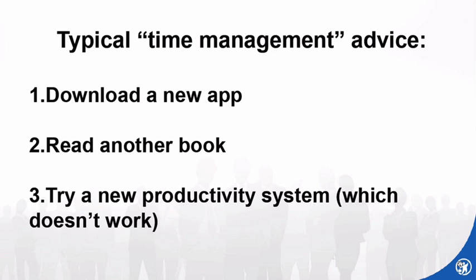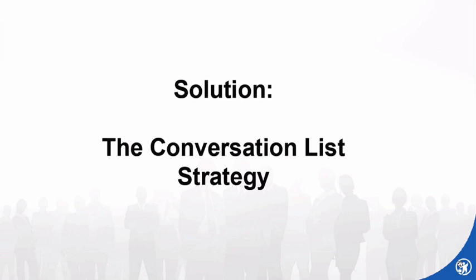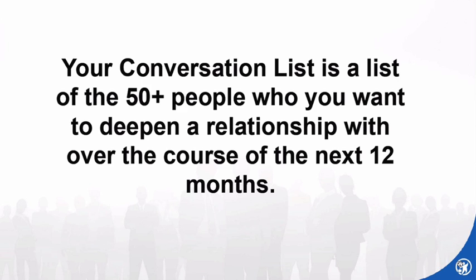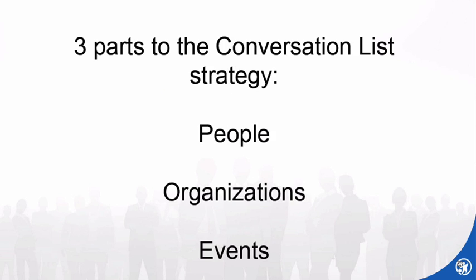The typical advice for someone who feels like they have no time is to download a new app, read another book on productivity, or try a new productivity system — which often doesn't work. What I present as a much better solution is what I call the conversation list strategy. Your conversation list is a list of the 50-plus people who you want to deepen a relationship with over the course of the next 12 months. It should take no more than 15 to 20 minutes to sit down and write it out — on an Excel spreadsheet, a piece of paper, or whatever.